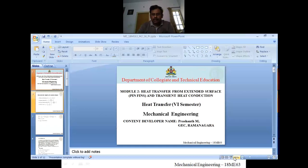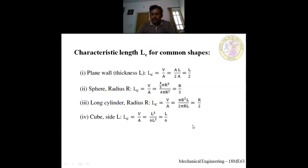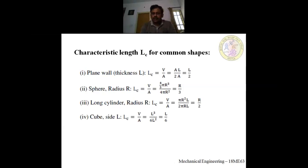In the last class we discussed unsteady state, where temperature parameters vary with respect to time. We then discussed lumped parameter analysis, where we assume the solid has very large thermal conductivity so conduction resistance is very small. Temperature gradients within the system are negligible, meaning temperature remains the same at all positions, and the whole body behaves as a lump with almost the same temperature at all positions.